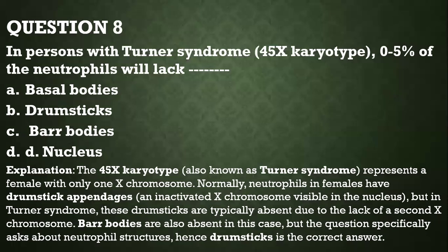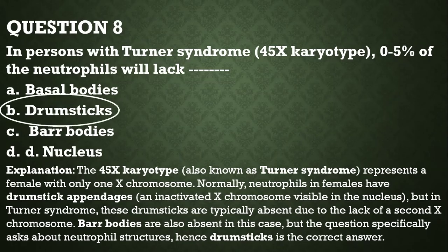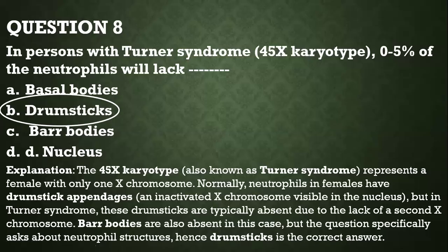Question number eight: in persons with Turner syndrome, which have the 45X karyotype, 0 to 5% of the neutrophils will lack what? The answer is drumsticks. Turner syndrome represents a female with only one X chromosome. Normally, neutrophils in females have a drumstick appendage in the nucleus, but in Turner syndrome, these drumsticks are typically absent due to the lack of a second X chromosome. Though Barr bodies are also absent in Turner syndrome, the question specifically asked about neutrophil structures, so drumsticks is the correct answer.